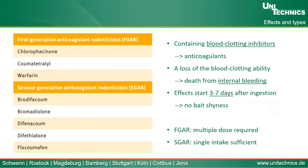There are two types of rodenticides: first generation and second generation. The first generation tends to be less toxic and does not accumulate in organisms. Since they are less toxic, multiple doses are needed to reach a lethal effect. The second generation is more toxic, tends to accumulate in organisms, and is less degradable — so only a single intake is enough.